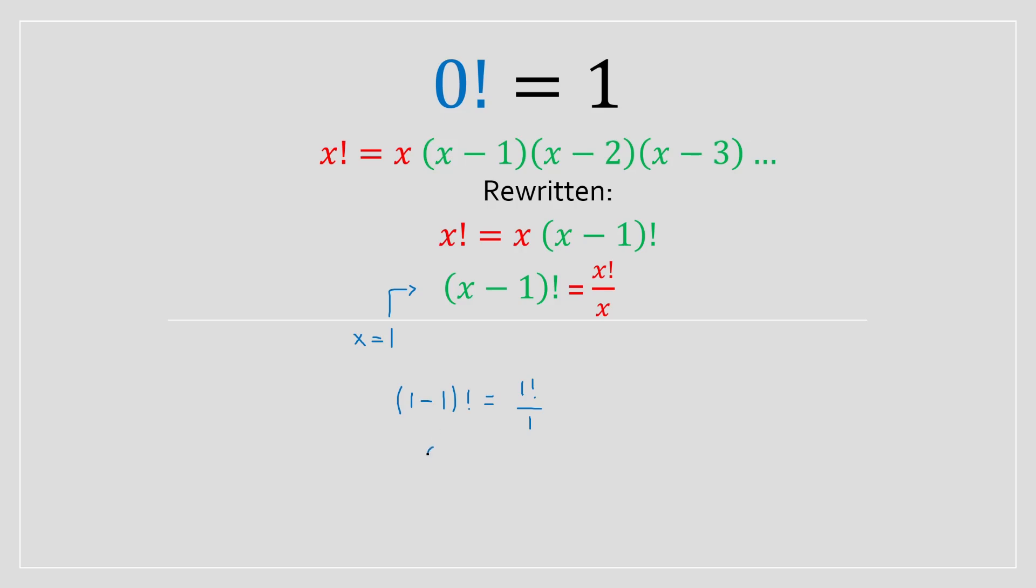What's 1 minus 1? Oh, that's just equal to 0, right? It's very important. And we're going to have the factorial left over. So you're going to have 0 factorial on the left-hand side.